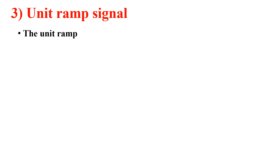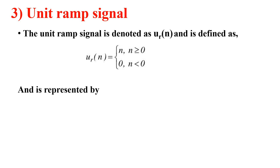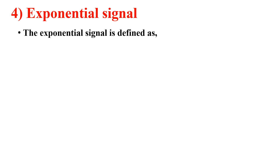The unit ramp signal is denoted as u_r(n), where r stands for ramp. It is defined as: u_r(n) = n for n ≥ 0, and u_r(n) = 0 for n < 0. Its graphical representation is shown here.